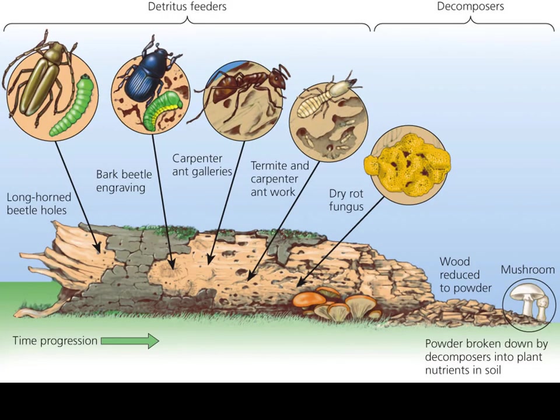We've also got decomposers and detritivores. Both eat matter that's already dead. The major difference is that detritivores break down big chunks of materials into smaller ones — like insects breaking down a log into smaller pieces. Decomposers actually break down these small bits into even smaller bits that restore the nutrients back to the soil. Detritivores support decomposers and make their job easier by breaking dead organic matter into smaller pieces, but decomposers could eventually do the job without detritivores — it would just take longer.